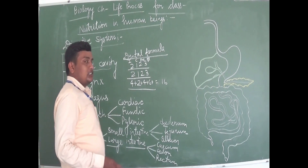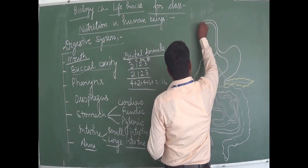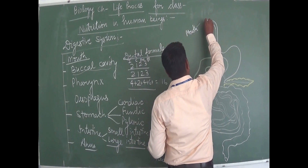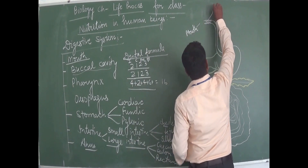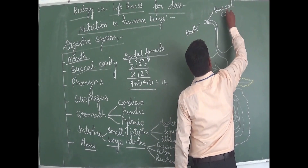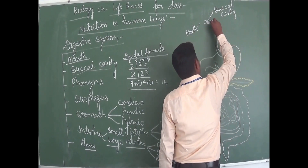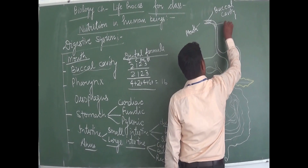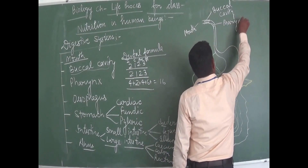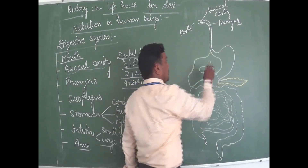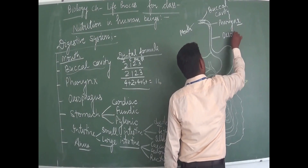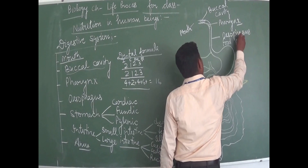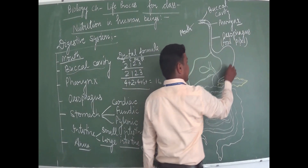Now let's see the parts in the diagram. Here is the mouth, buccal cavity, pharynx — which is a common passage for food and air — then esophagus, also known as the food pipe. Food passes to the stomach through the esophagus.